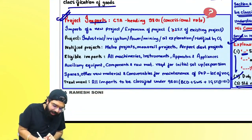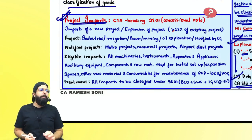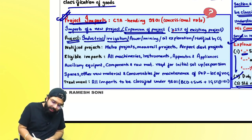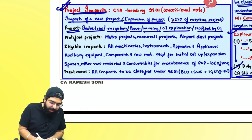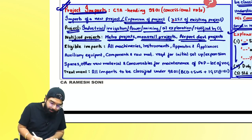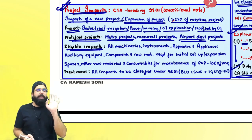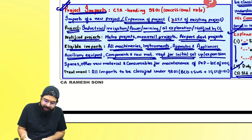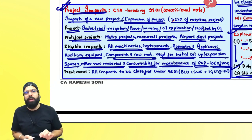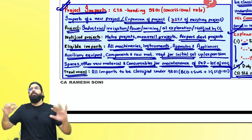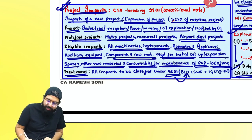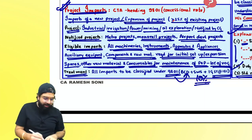The next topic is project imports. If there is an import for a new project or expansion of a project that is greater than or equal to 25 percent of the existing project, and the project can be industrial, irrigation, power, mining, oil exploration, or any project notified by the central government (e.g., metro project, monorail project, airport development project), eligible imports include all machinery required, instruments, apparatus, appliances, auxiliary equipment, components and raw materials for initial setup or expansion. Spares can also be imported, and other raw materials and consumables for plant maintenance up to 10 percent of the value. All items imported for a project need not be classified under different headings — you can classify under one heading: 9801, where basic customs duty, 10 percent social welfare surcharge, and IGST at 18 percent shall be payable.